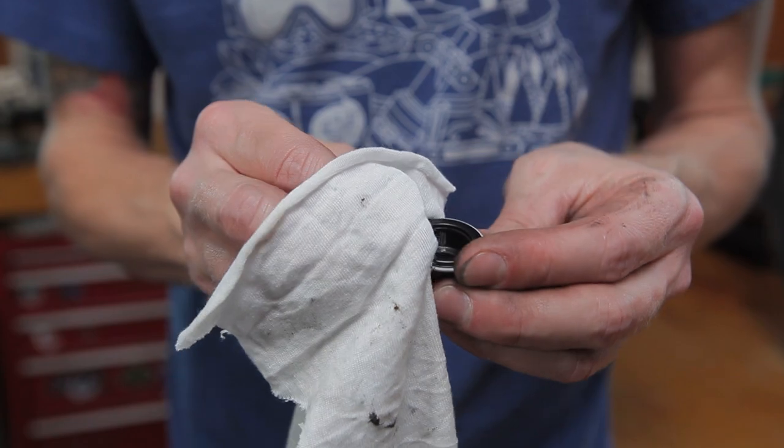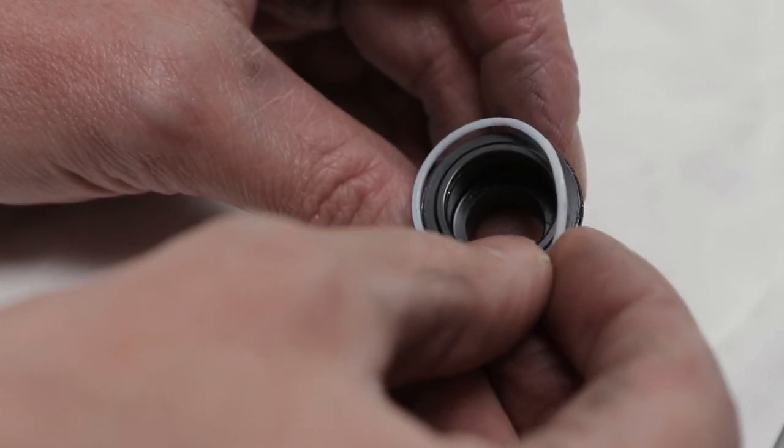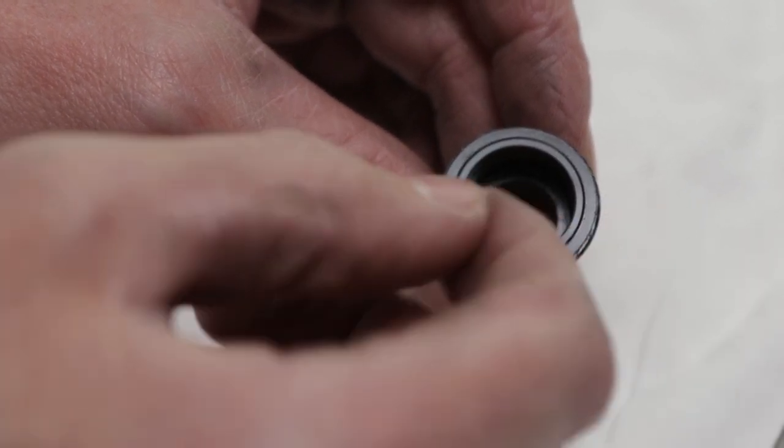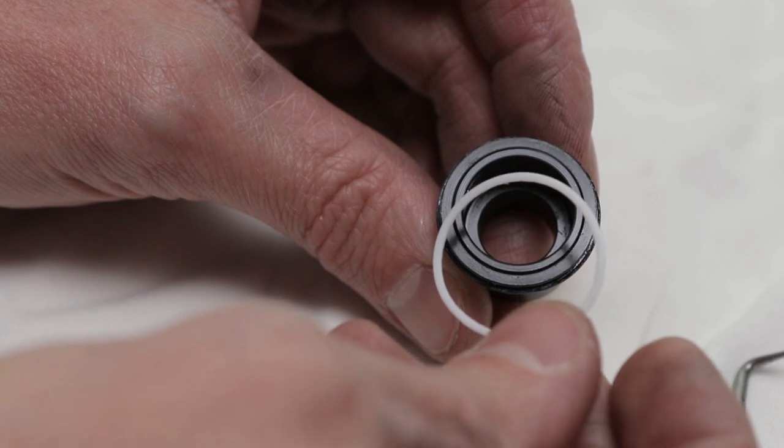If your Teflon seals are deformed or damaged, they can easily be replaced. Simply remove the old seal and put a fresh one in its place. A pick may come in handy to get the seal free.